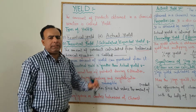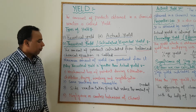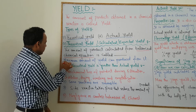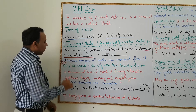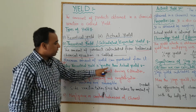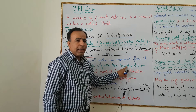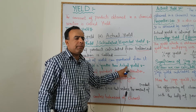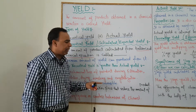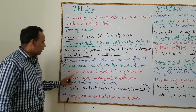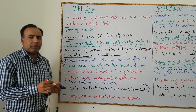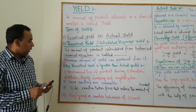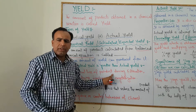Now there is a short question: why is theoretical yield greater than actual yield? What is the reason behind it? There are four reasons. Number one: mechanical loss of the product.